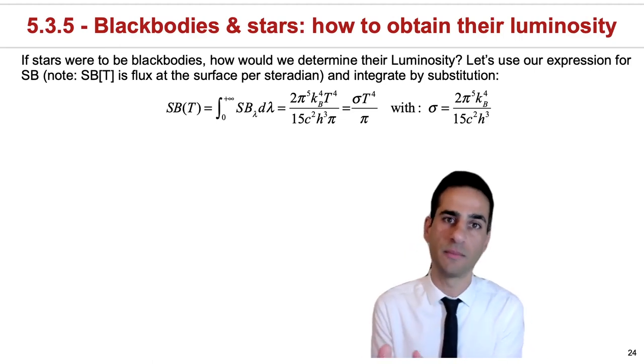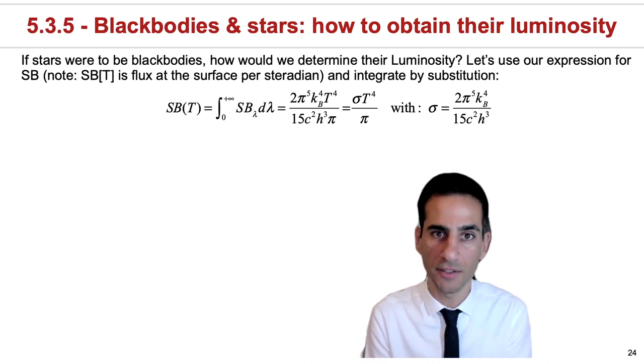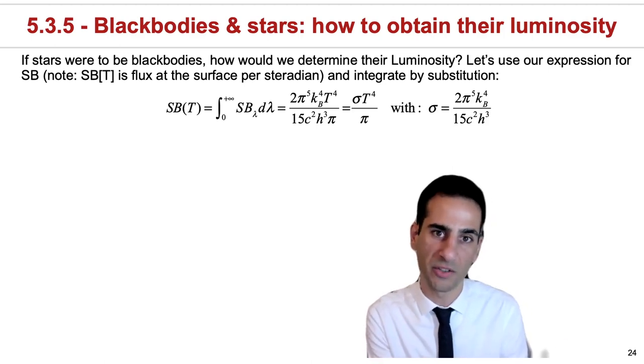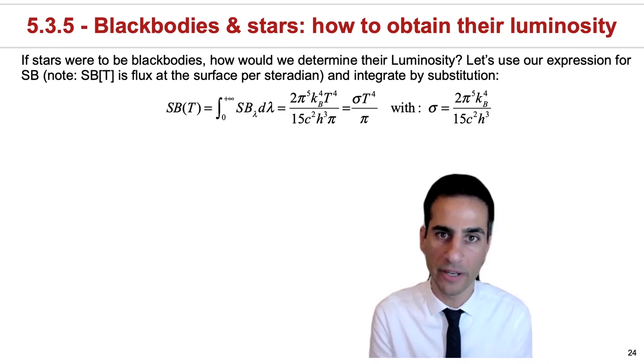We already saw how we can approximate stars as blackbodies and apply what we know about colors, so that if we measure a color we can transform it roughly into a temperature of a star, but we ought to do better than that.